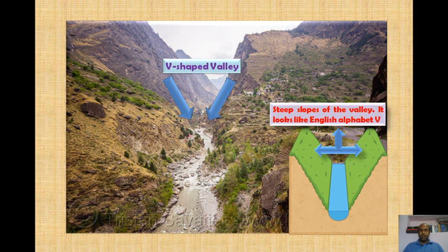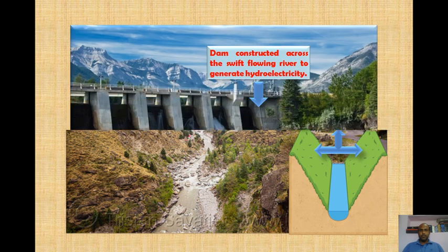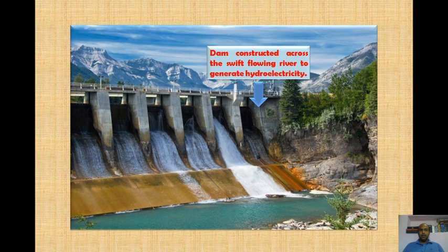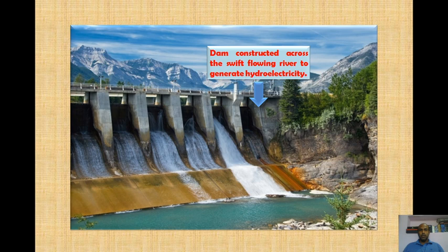When vertical erosion by the river develops a steep slope of the valley and it looks like the English alphabet V, it is known as a V-shaped valley. As rivers are very swift in the upper course, we can construct a dam across the swift-flowing river, which will help to generate electricity. The electricity generated from water is known as hydroelectricity, because the word 'hydro' comes from the Greek word 'hudor', which means water.